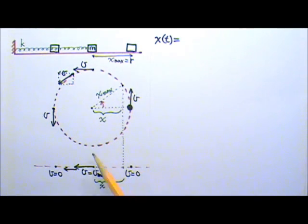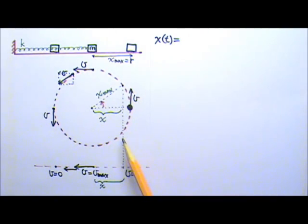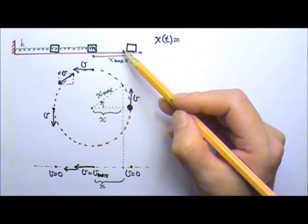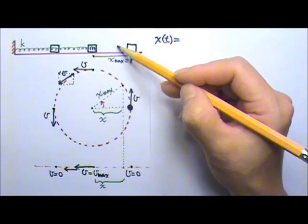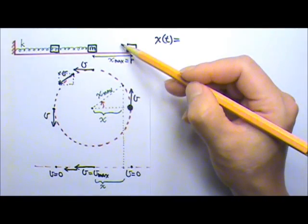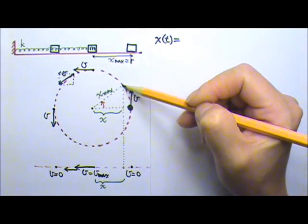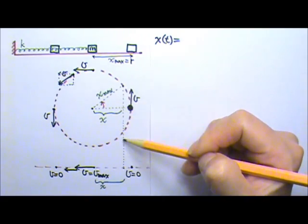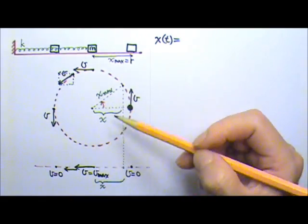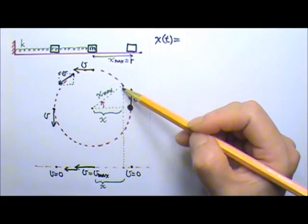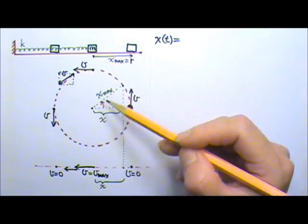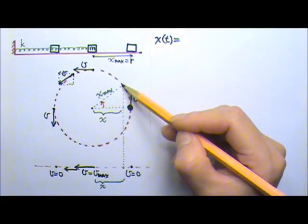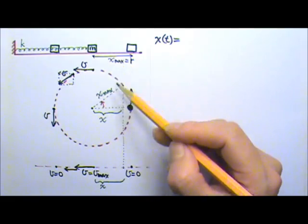Let's go back and look at the matching circular motion again. It can help us find a simple harmonic oscillator's position as a function of time. Let's say at time t, the oscillator is at this location, which means the matching circular motion is over here. The shadow of it is over here. We can form a right triangle like this. This part, the hypotenuse, is the radius of the circular motion, so it's the amplitude.